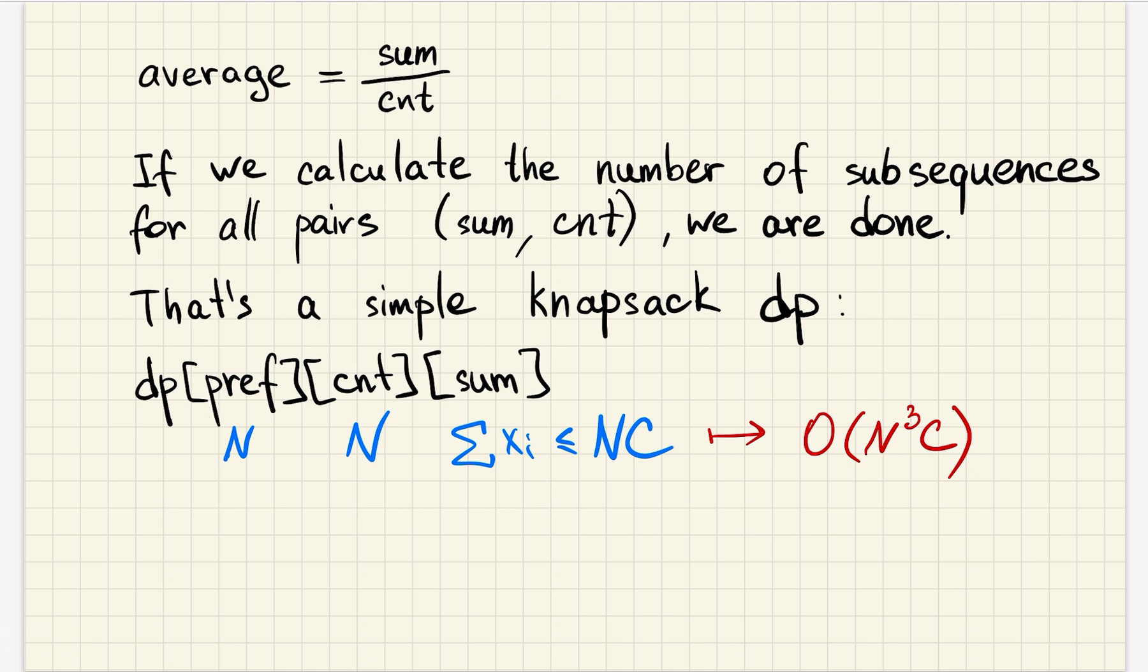By definition, average is sum divided by the size of the chosen set, so count. So if we calculate the number of sequences for all pairs of sum and count, we will then be able to iterate over all pairs, check if average is actually the number A that is given, and sum up the number of sequences with correct average.